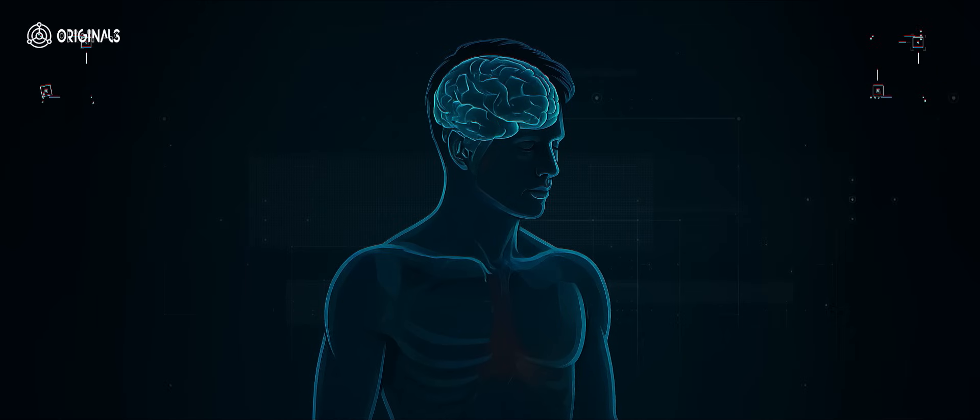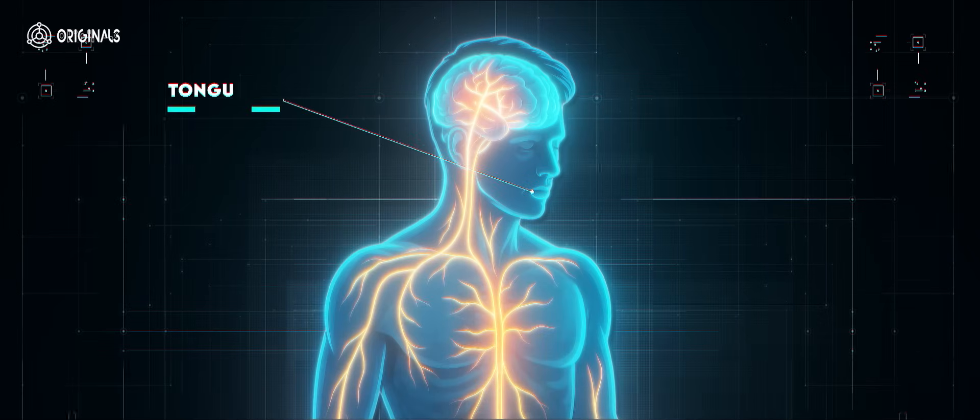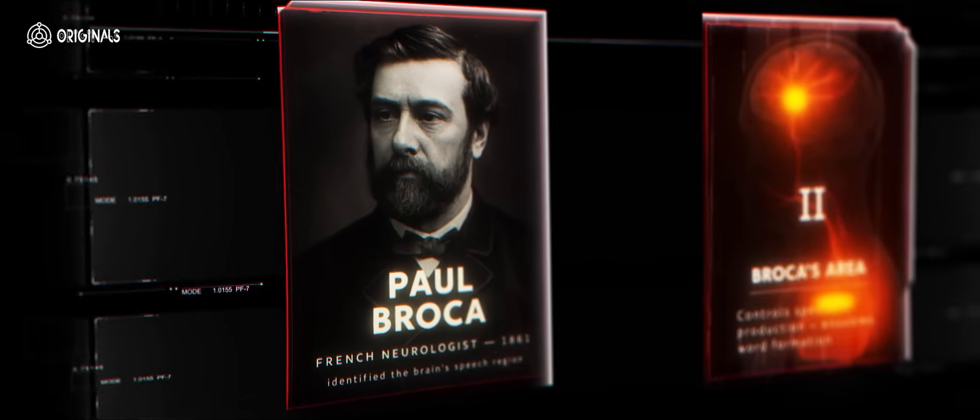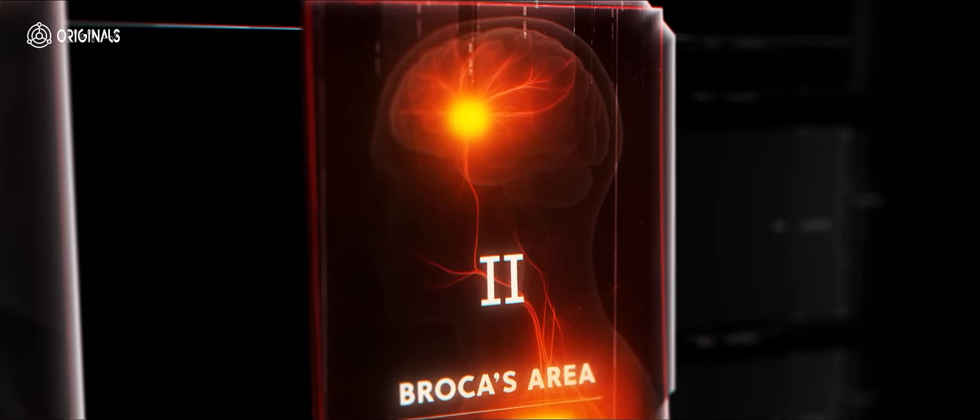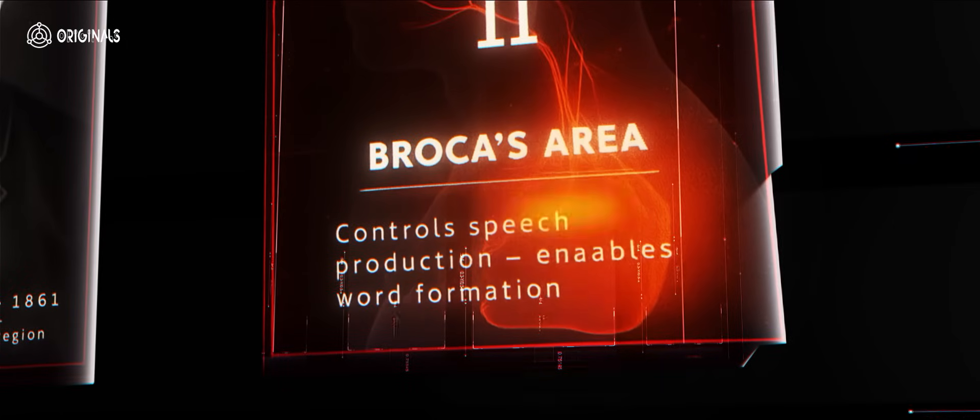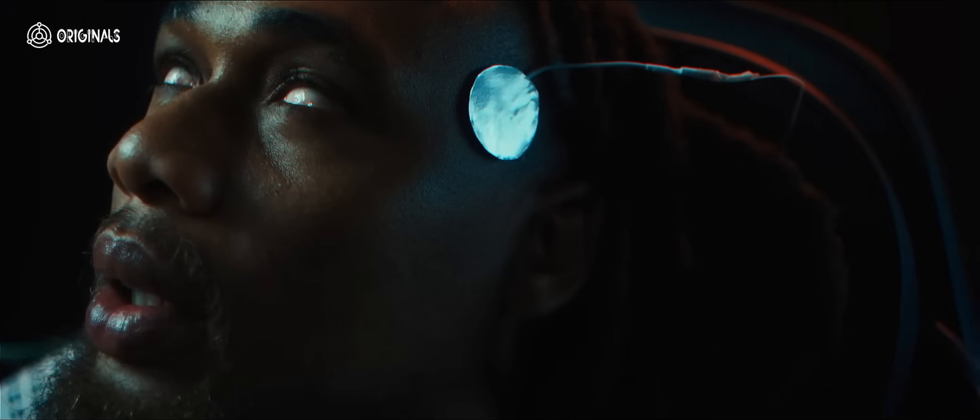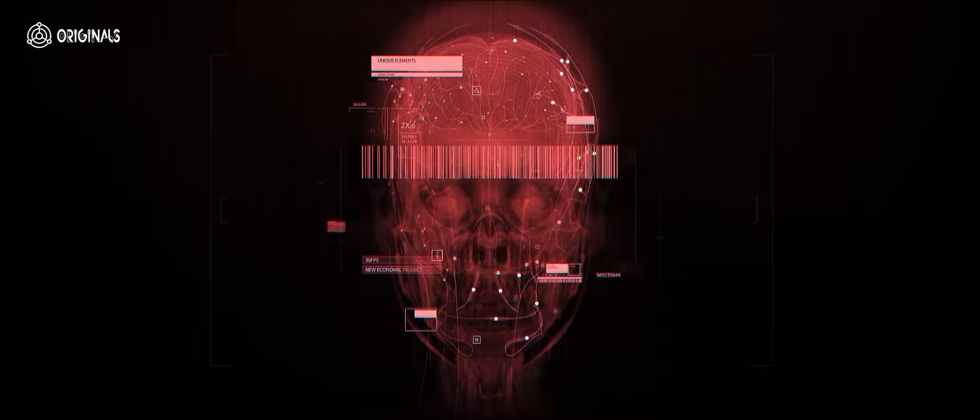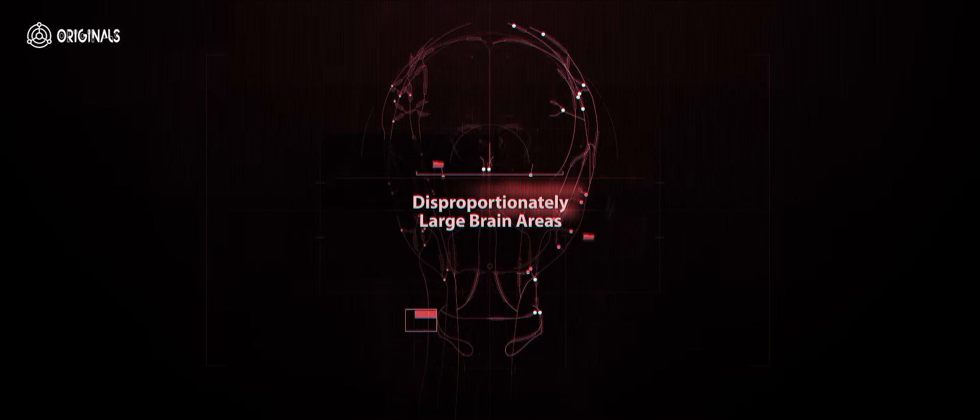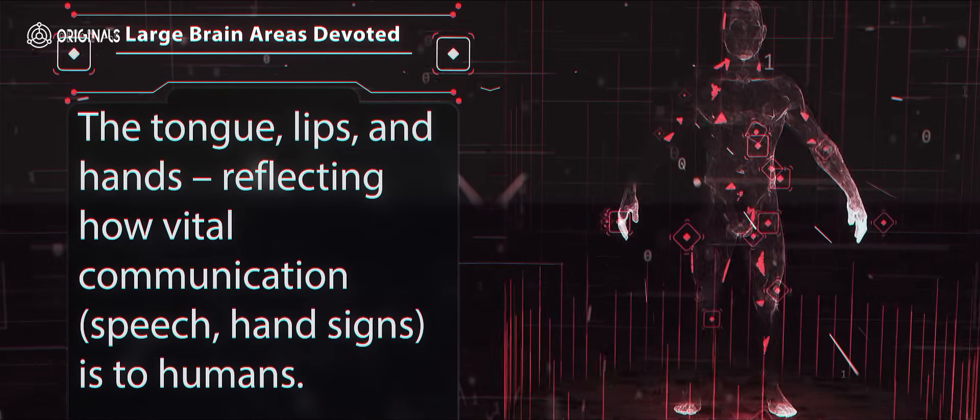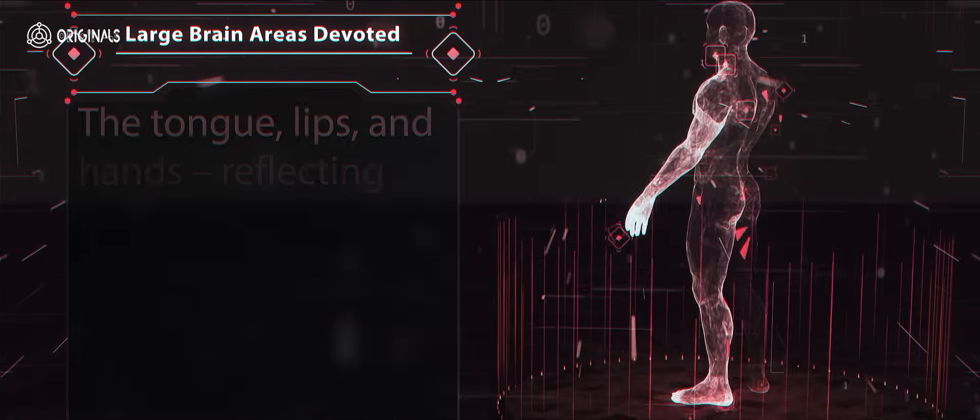Crucially, the motor cortex sends signals to our vocal apparatus—tongue, lips, larynx—to produce speech, or to our hands for gestures. French neurologist Paul Broca first linked damage in a specific left frontal region to lost speech, revealing that speech ability is localized in the brain. A century later, neurosurgeon Wilder Penfield electrically stimulated awake patients' brains and mapped which areas control various body parts and sensations. He found disproportionately large brain areas devoted to the tongue, lips, and hands, reflecting how vital communication—speech, hand signs—is to humans.